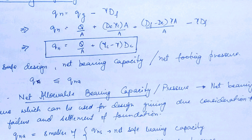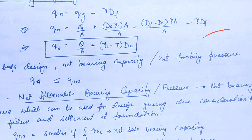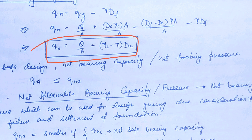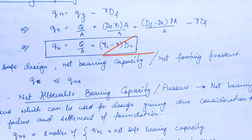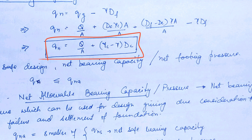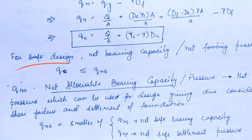Putting in the values: Q_net = Q/A + DC·γC/A − (DF − DC)·γA/A − γ·DF. After subtracting the overburden pressure, the whole term reduces to Q_net = Q/A + (γC − γ)·DC. And what you see is that if DC, the depth of the concrete footing, is very small compared to DF, we can neglect that term, so Q_net becomes simply Q/A.